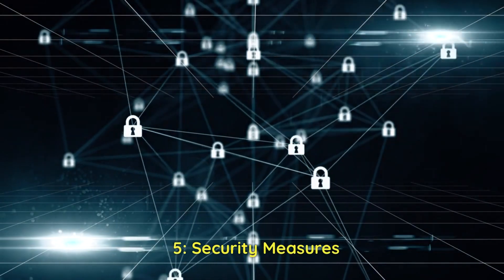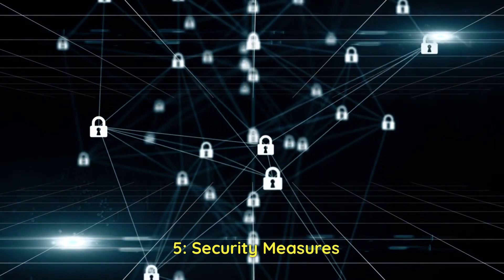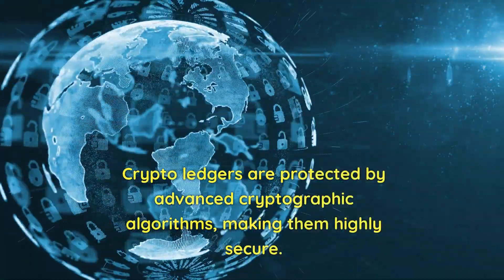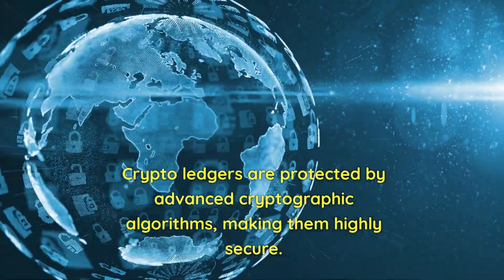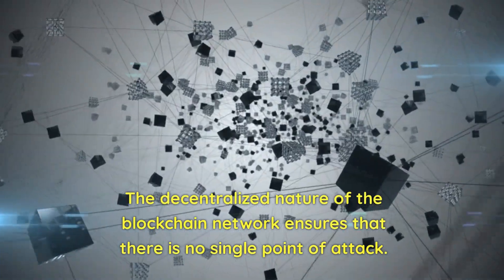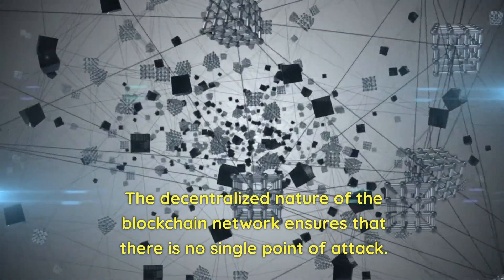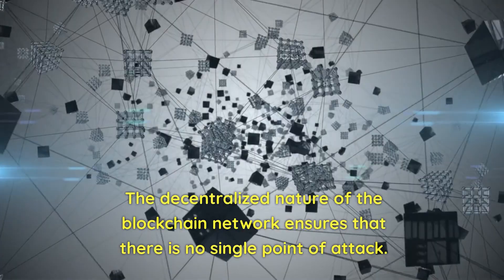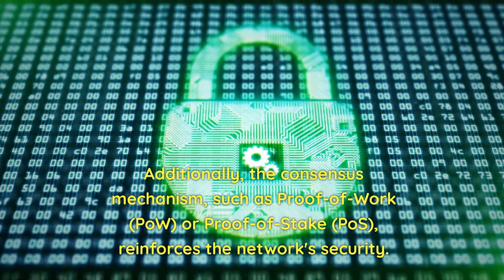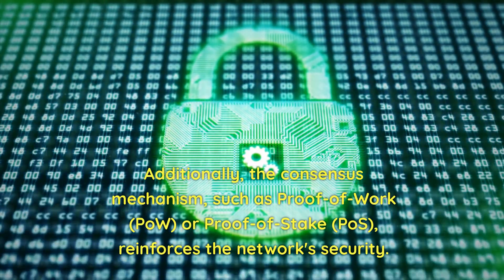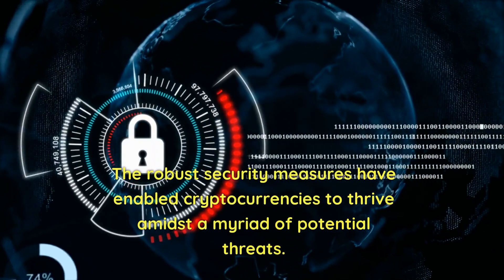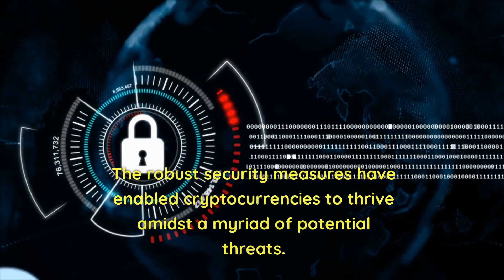Five: security measures. Crypto ledgers are protected by advanced cryptographic algorithms, making them highly secure. The decentralized nature of the blockchain network ensures that there is no single point of attack. Consensus mechanisms such as Proof of Work (PoW) or Proof of Stake (PoS) reinforce the network's security. These robust security measures have enabled cryptocurrencies to thrive amidst a myriad of potential threats.